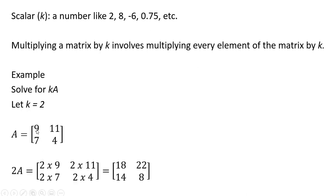So 2 times 9, 2 times 11, 2 times 7, 2 times 4. And here is our new matrix after the scalar multiplication.